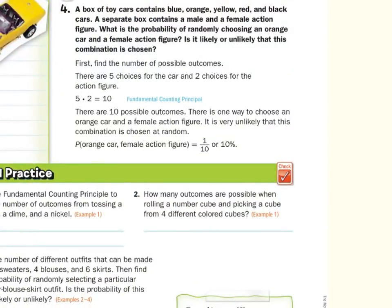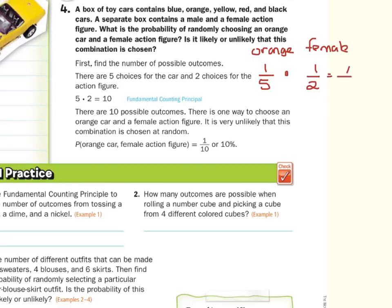In our last guided example, a box of toy cars contains blue, orange, yellow, red, and black cars. A separate box contains a male and female action figure. What is the probability of randomly choosing an orange car and a female action figure? There are 5 choices for the car and 2 choices for the action figure, so 5 times 2 is 10 total outcomes. There is one way to choose an orange car and a female action figure, so it's 1 out of 10. Alternatively, 1/5 times 1/2 also gives 1/10.